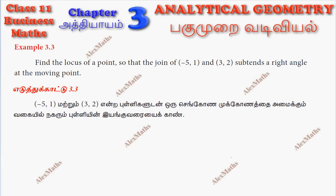Hi students, this is Alex here. Example 3.3: Find the locus of a point so that the join of (-5, 1) and (3, 2) subtends a right angle at the moving point.